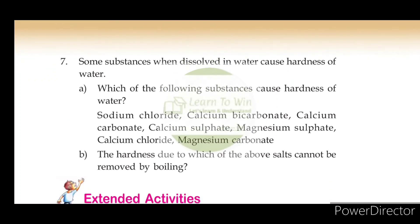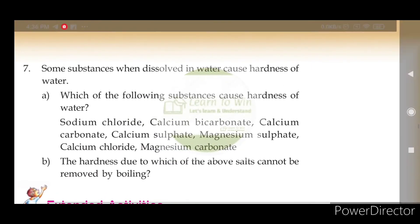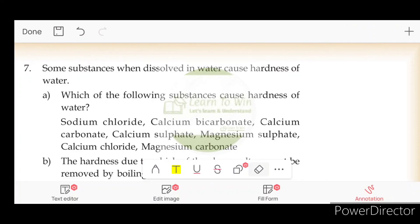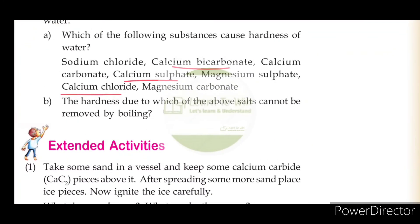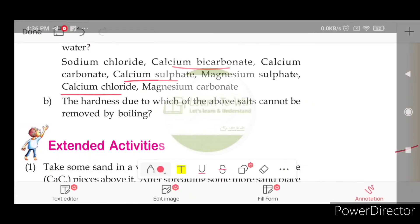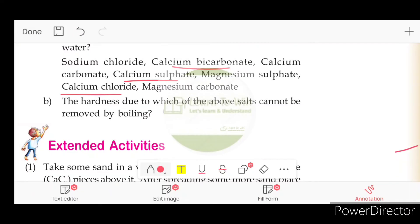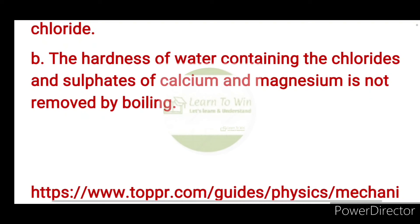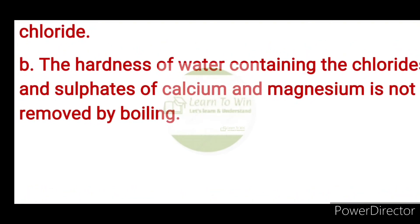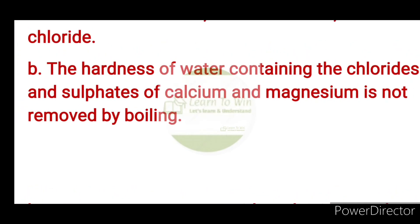Some substances when dissolved cause hardness of water. These substances include calcium bicarbonate, calcium sulfate, calcium chloride, magnesium sulfate, and magnesium chloride. The hardness due to chlorides and sulfates of calcium and magnesium cannot be removed by boiling.